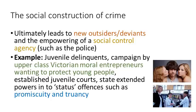An example could be the concept of juvenile delinquents — young people committing small acts of antisocial behaviour, criminality, or deviance. In the Victorian period, there was a campaign by upper-class Victorian moral entrepreneurs, mainly parents, wanting to protect young people. This ultimately led the state to establish juvenile courts primarily aimed at dealing with young people and their behaviour. The state extended powers to the police to police young people and to police what we might call status offences — offences which offend or harm an individual's status within society, such as promiscuity, sexual lewdness, and truancy, failing to turn up to school or to work on time.